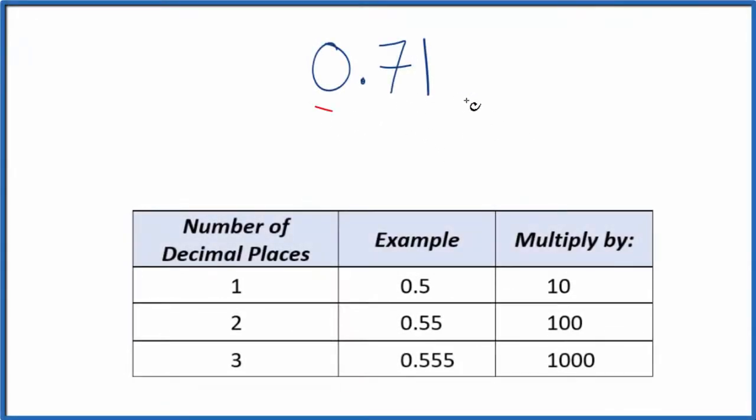If you're asked to convert the decimal 0.71 to a fraction, here's how you do it.